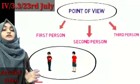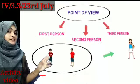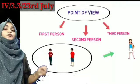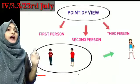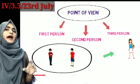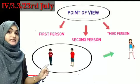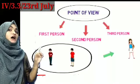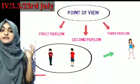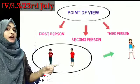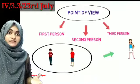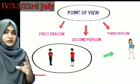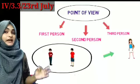So the first person is Ram, the second person is Shyam, and the third person is Meera. Ram and Shyam are in one room talking about Meera. Ram is speaking about Meera to Shyam, and Shyam is the listener — he is listening to what Ram is saying about Meera. That is the example for first person, second person, and third person point of view.